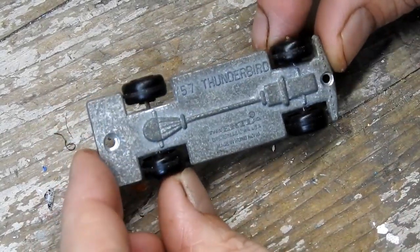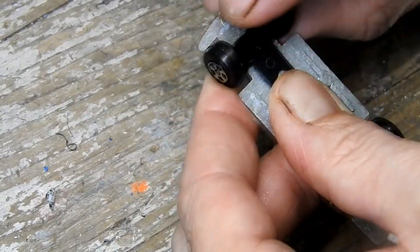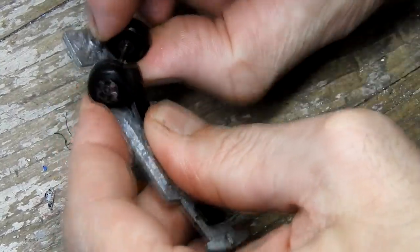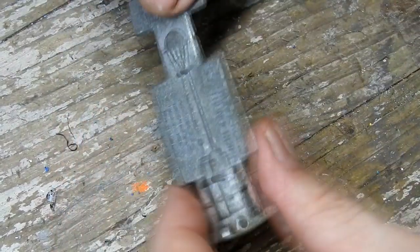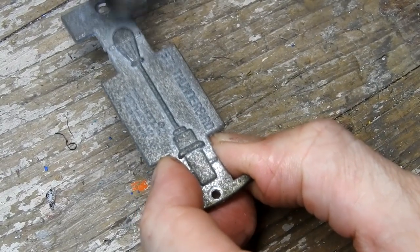Now I can move on to the base. It's in pretty good condition really, it's just got a lot of oxidation on it. I begin by popping out the wheels from under the plastic suspension, then I can tidy it up with the wire brush on my rotary tool.